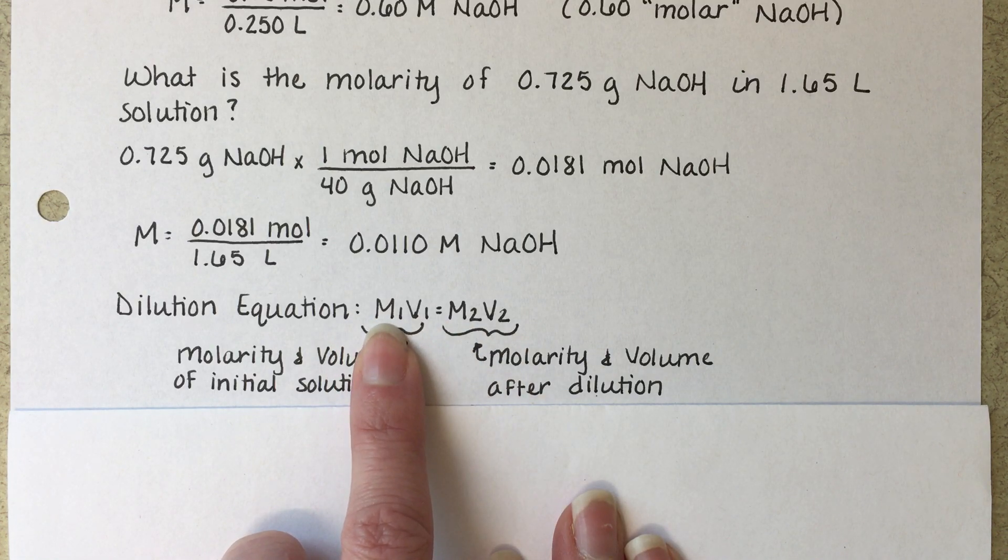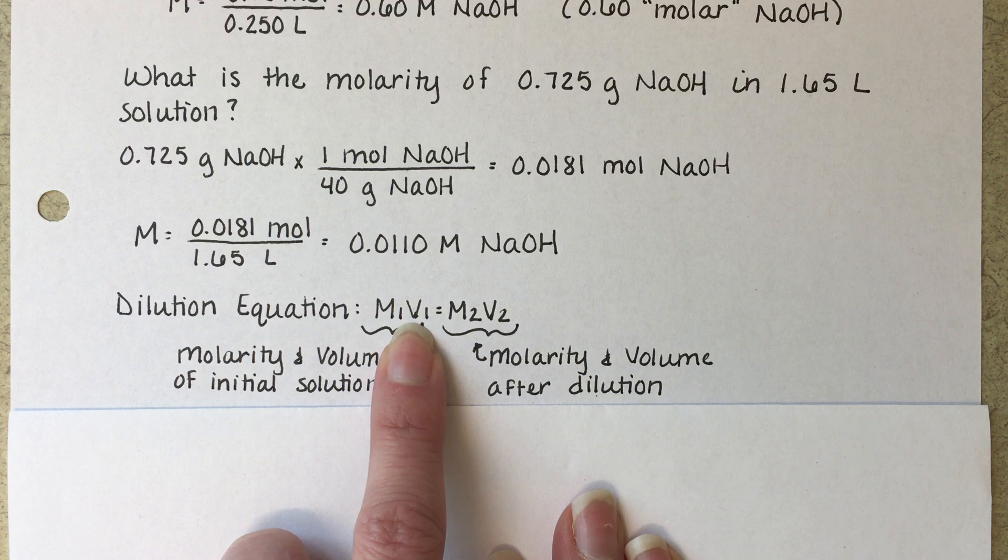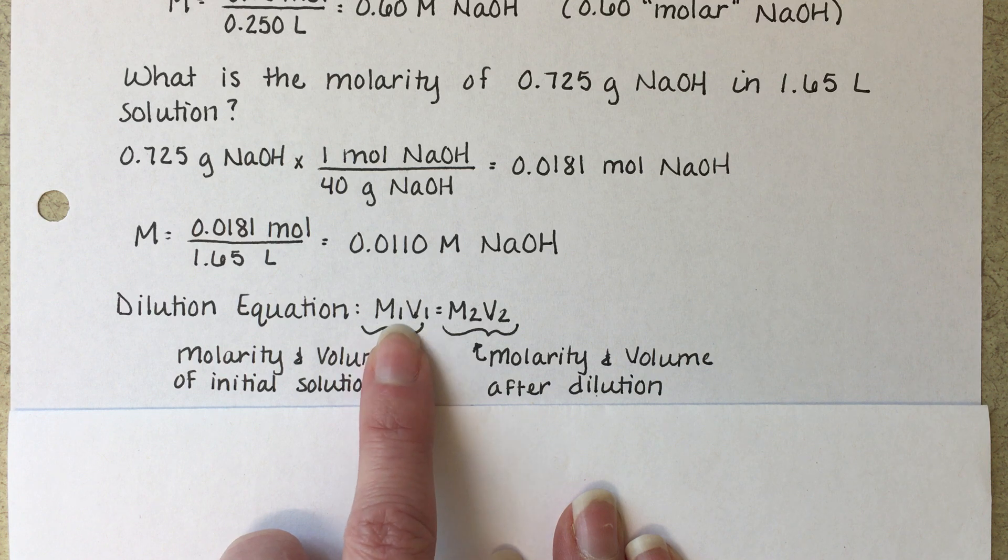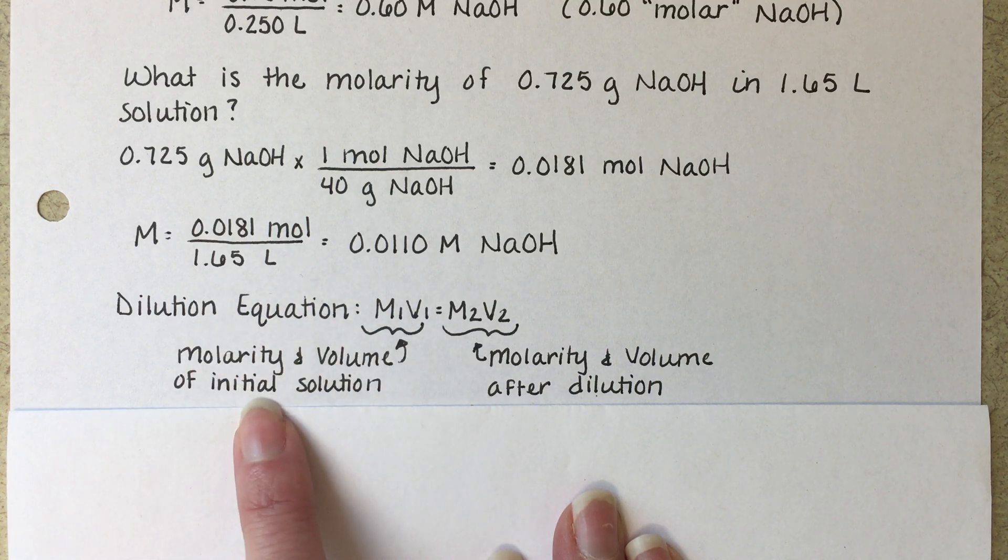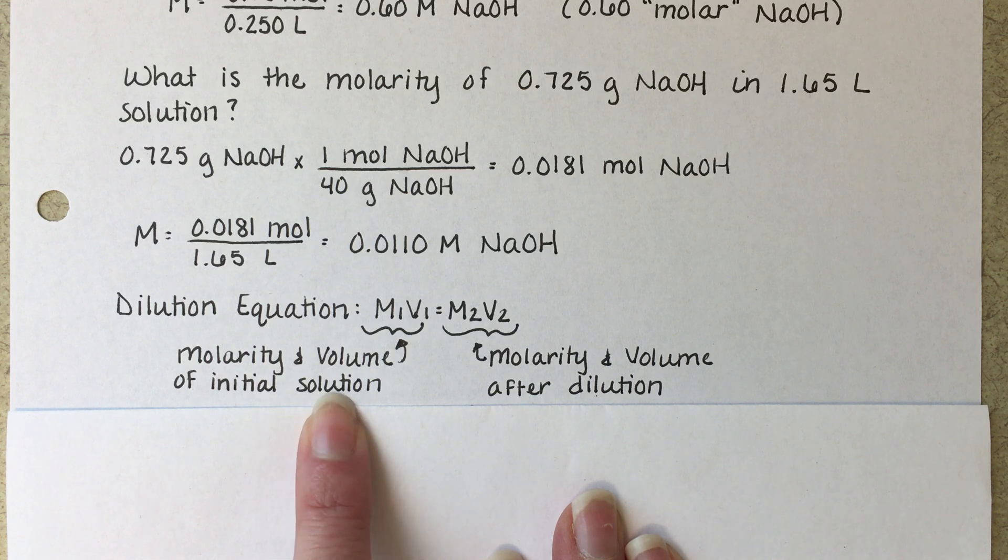M represents molarity. V represents volume in any unit that you want. It could be liters, could be milliliters.